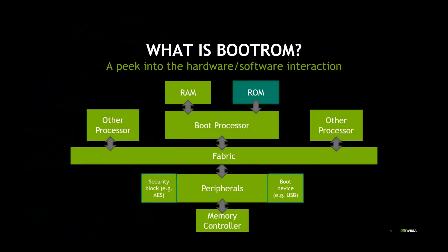Here is a top-level diagram of a typical SOC. There is a boot processor — these days mostly a separate dedicated processor. The dark green box is the boot ROM. The boot processor executes instructions in the boot ROM one by one, and while doing that it is initializing or configuring the rest of the SOC through the fabric — also called the backbone or crossbar. It also uses a connected RAM as a scratch pad for stack or heap.